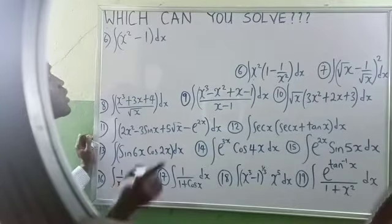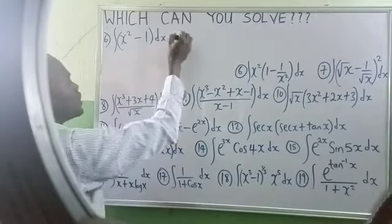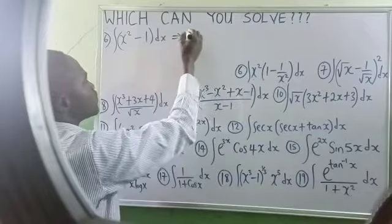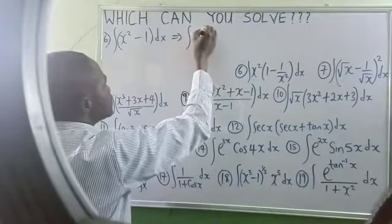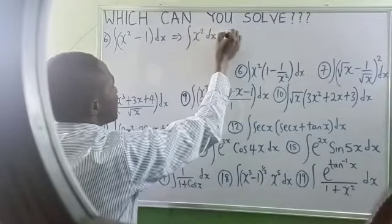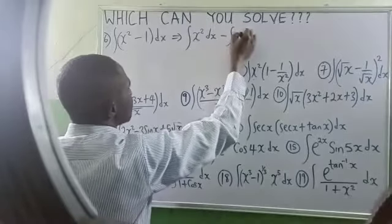Now, at this point, take the integral sign to each and every term. You have it will be this minus integration of 1 dx.